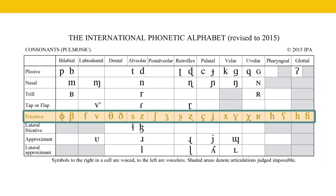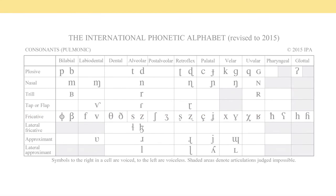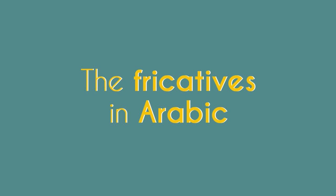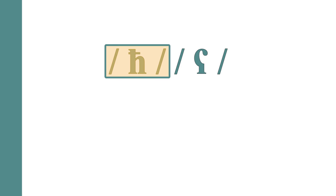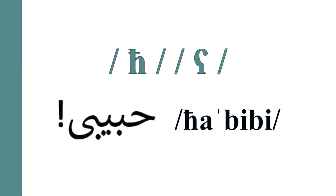The other fricatives do not exist in English but can be found in other languages. For example, Arabic has the voiceless pharyngeal fricative /ħ/ as well as the voiced pharyngeal fricative /ʕ/. Both pharyngeal fricatives exist in Arabic. The voiceless one /ħ/ appears in the word 'habibi', which means 'dear'.